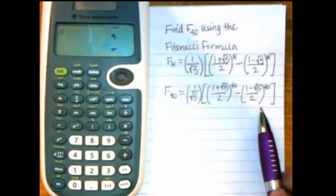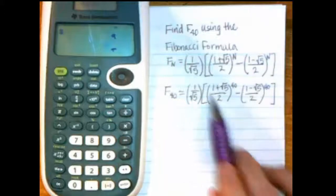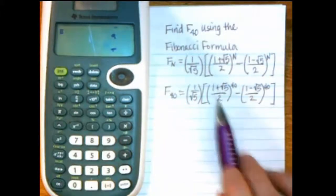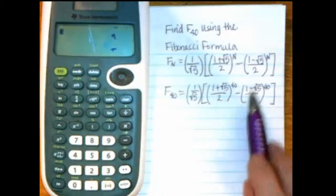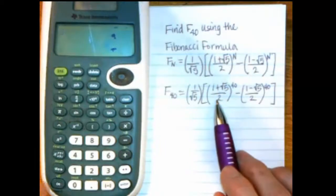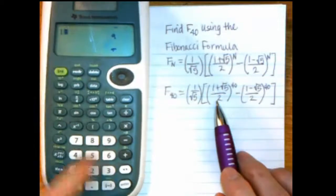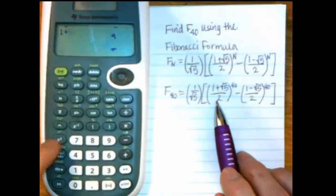Now, to do that on the calculator, same process. I have to work inside the big parentheses first, and then within there I want to start inside this set or this set. This set, I'll just do it first because it's on the left. So remember for this calculator, 1 plus square root of 5, like that.